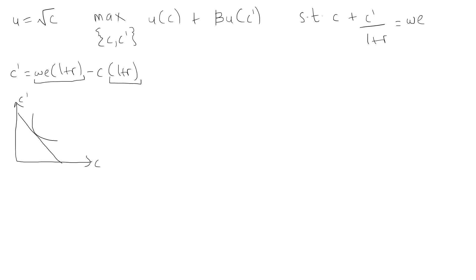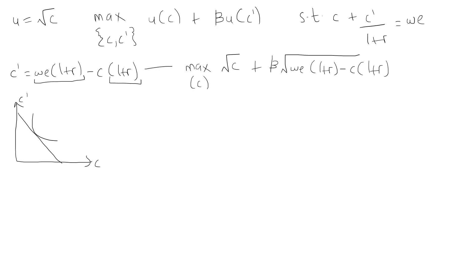The reason we have rewritten this in terms of c prime is so that we can simplify our task of maximizing the objective function. This can now be rewritten only in terms of c, which gives us square root of c plus beta times the square root of this whole expression, because c prime is equal to we times 1 plus r minus c times 1 plus r. The first order condition is obtained by taking the derivative of this expression and equating it to zero.